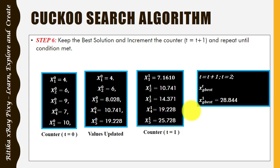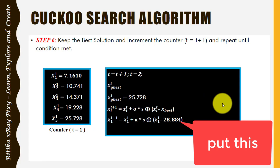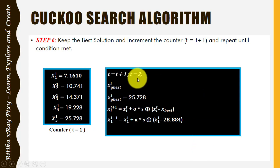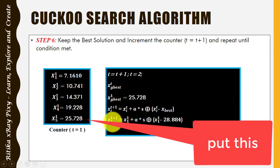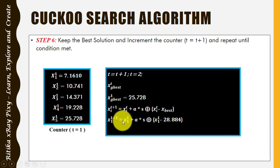In the next iteration, put the global best value of 28.844. The counter is now 2. We calculate the new solution for the first cuckoo at iteration 2. The position of the first cuckoo at iteration 1 was 7.16, and global best is 28.884. We continue updating bad solutions with new and better ones.